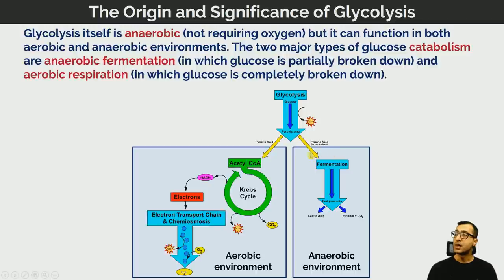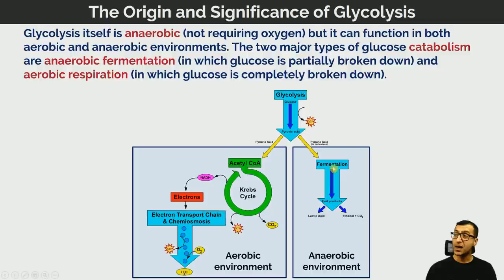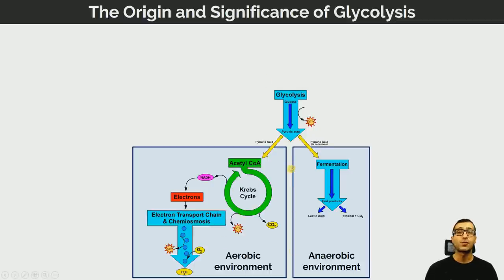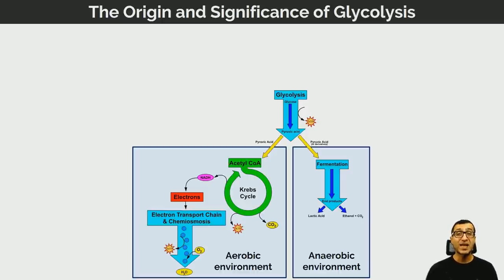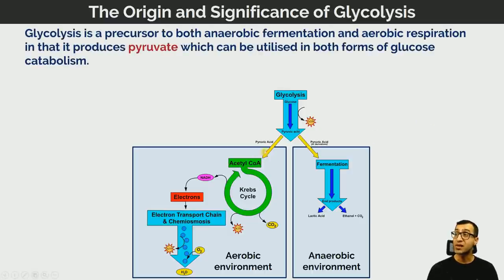The other side of the diagram shows anaerobic fermentation. In plants this produces ethanol, while an analogous process in animals under anaerobic conditions produces lactic acid. Glycolysis is a precursor to both anaerobic fermentation and to the aerobic parts of respiration, because it produces pyruvic acid — pyruvate — which can then be utilized as a substrate for each of these different kinds of processes.